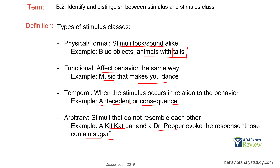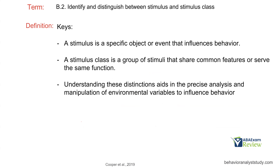Key takeaways: a stimulus is a specific object or event that influences behavior — it can be an antecedent or a consequence, it's a change in the environment. A stimulus class is a group of stimuli that share common features or serve the same function. Understanding the distinctions between different stimuli helps us be precise when manipulating environmental variables. We're changing the environment, and in order to know what to change, we need to know what is actually influencing behavior.